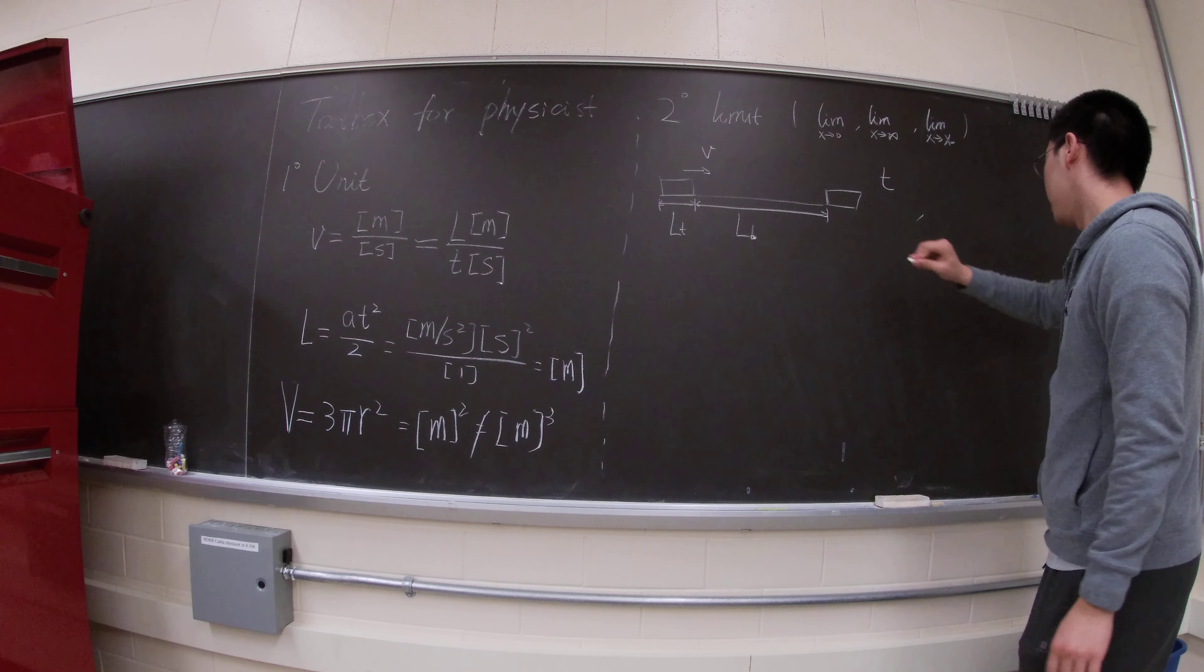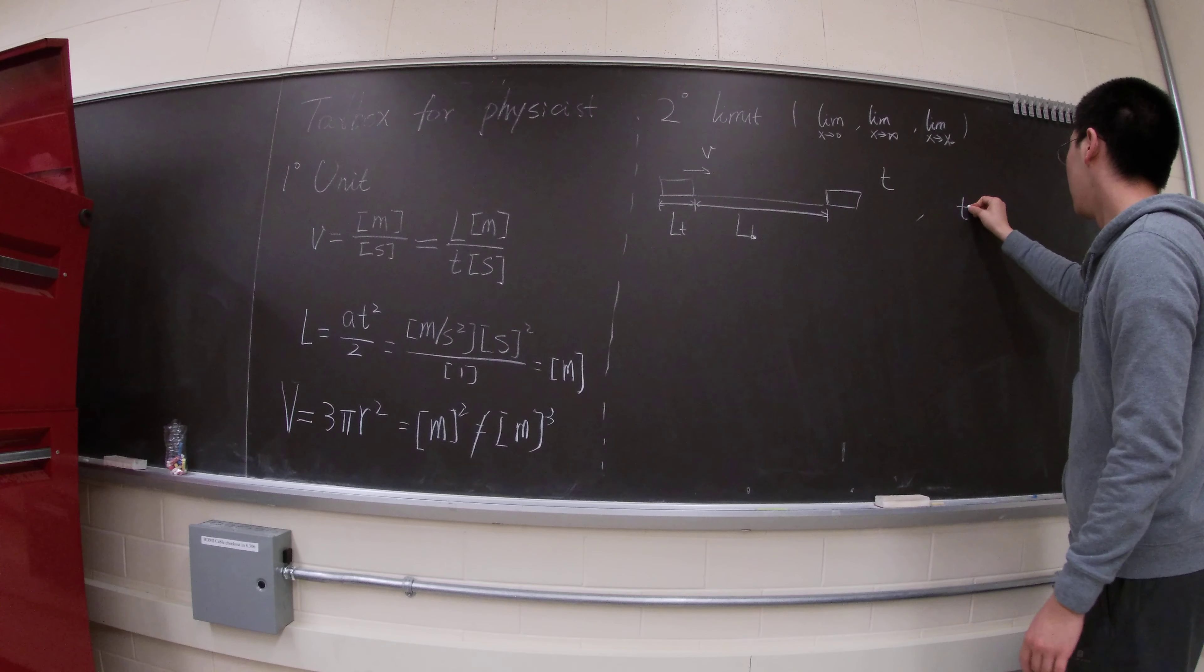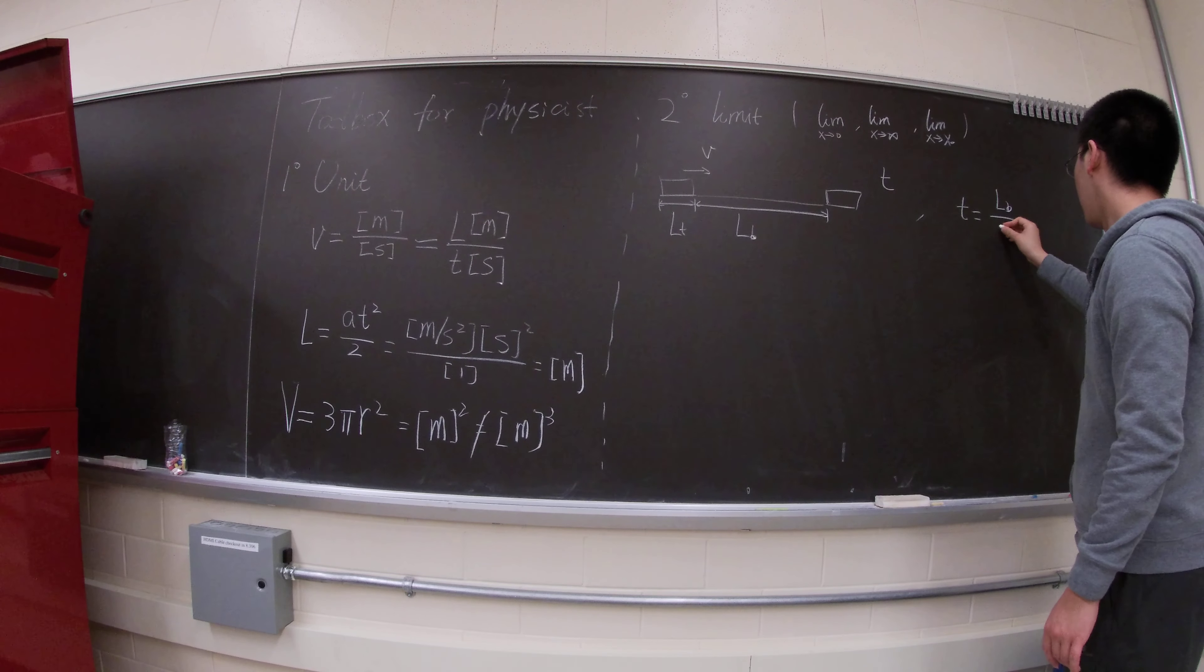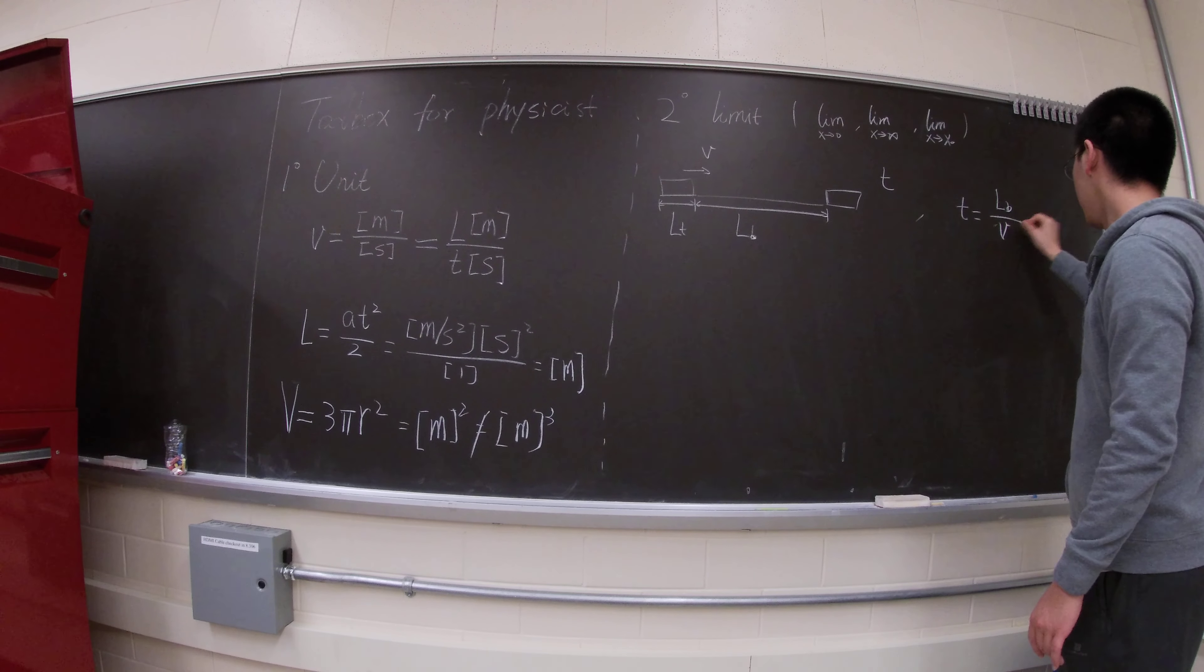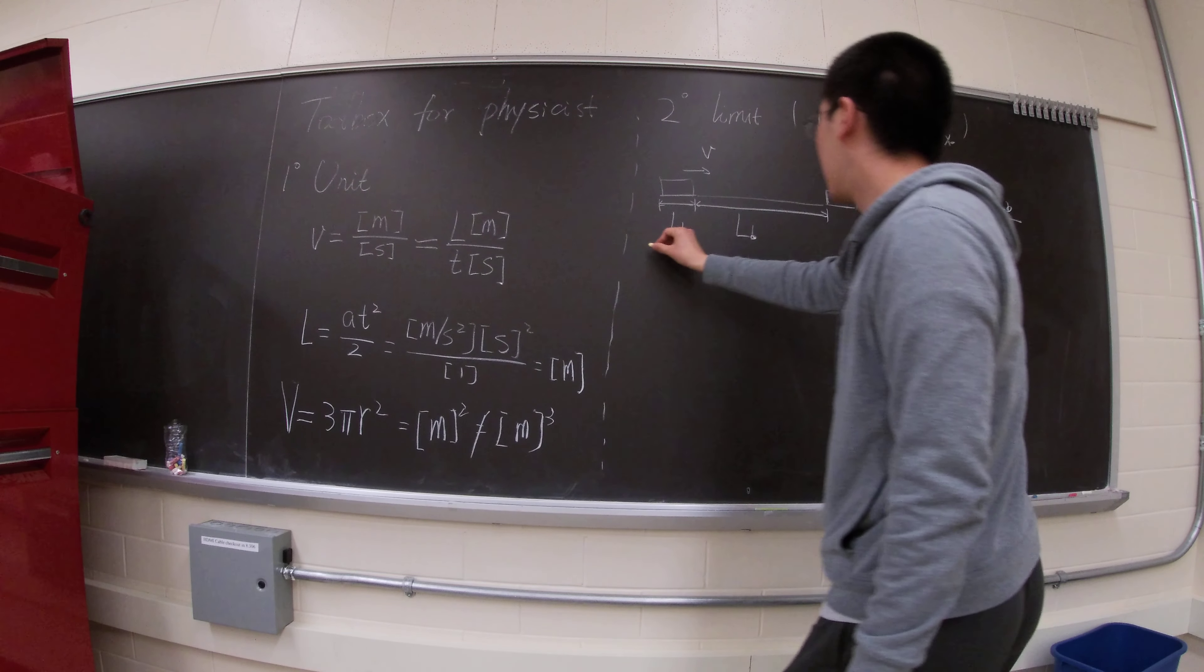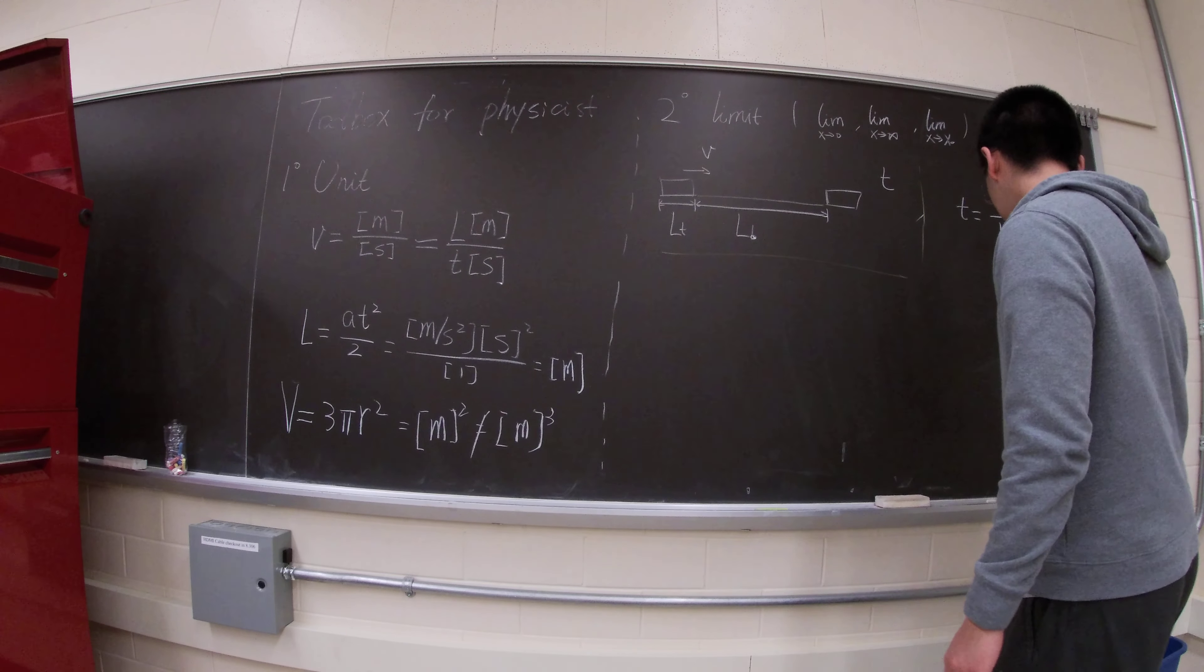So somehow, you get an answer of T equals LB bridge over V. I mean, it's kind of like an intuitive way of thinking about it. So let's take the limit and see what will happen.